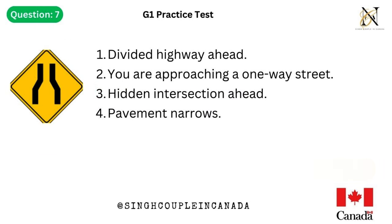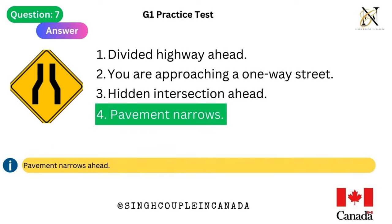Question 7. This traffic sign means: 1. Divided highway ahead. 2. You are approaching a one-way street. 3. Hidden intersection ahead. 4. Pavement narrows. Answer is 4. Pavement narrows ahead.